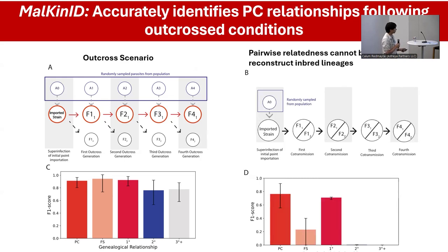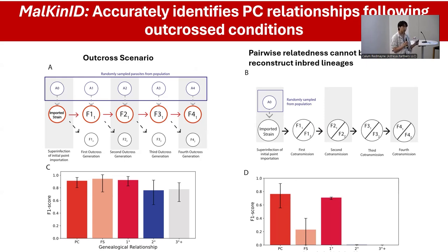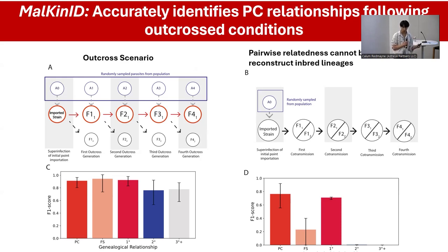Where it gets really, really messy is if you don't have this nice structure guaranteeing outcrossing, but instead a situation where inbreeding is more common. This would be more common in a lower transmission area where you're not likely to be reinfected with a second infection. Under this situation, you can technically identify parent-child relationships — it's kind of okay — but everything else falls off a cliff. This suggests that using pairwise genetic relatedness to infer genealogical classes and reconstruct transmission chains will not work in a population where inbreeding is rampant, which means it will not work very well in a low transmission setting.